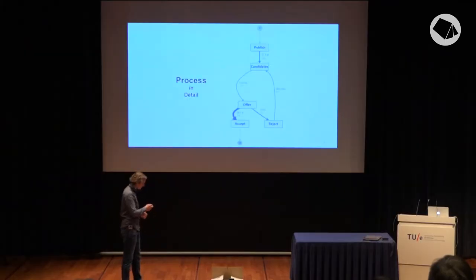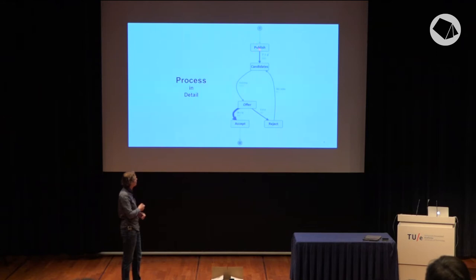This is the process visualized in process mining style. We can see the publish time, the list of candidates, the offering part, rejection, and exception. This is not spaghetti — it's a clear process map. Let's have a closer look at the offering part.